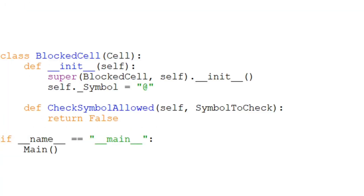The BlockedCell class represents cells that are blocked and cannot contain any symbol. It inherits from the Cell class but overrides 'check_symbol_allowed' to always return false, indicating symbols are never allowed in blocked cells. This allows differentiation between regular cells and blocked cells. The constructor calls the superclass Cell constructor and sets the symbol to the '@' symbol. Finally, using the conditional 'if __name__ == "__main__"' ensures the main function is executed only when the script is run directly, allowing the code to be reused and imported into other modules without automatically running the main program.